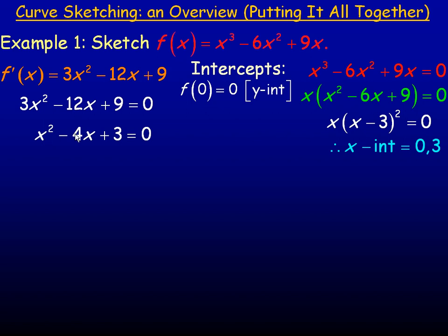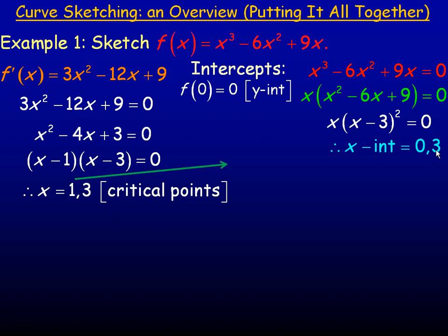And so to factor this, and if you want to use the quadratic formula you can, but it's fairly easily factored. The two numbers that add to negative 4 and multiply to positive 3 would be negative 1 and negative 3. So this will factor into (x - 1)(x - 3). So if we set these two factors to 0, we get 1 and 3. Those are our critical points, our possible local extrema. Notice that the 3 here is the same as the x-intercept. So at the x-intercept of 3, there's a possible minimum or maximum point. So let's find the y-coordinate of the point where x is 1. We'll put 1 back in the original function, and that works out to be 4. So that will be the point (1, 4). There's a possible local minimum or maximum point there.